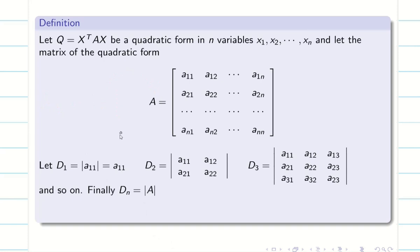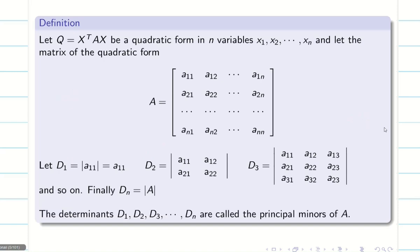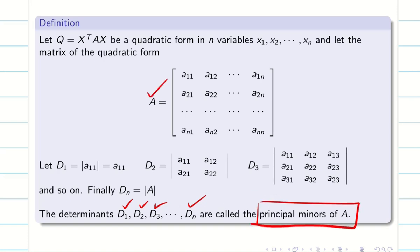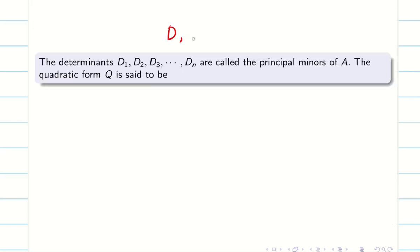Since our concern is a 3×3 matrix, D1, D2, and D3 — where D3 is the determinant of A — are called the principal minors of A. From D1, D2, D3, ..., Dn, we are going to determine the nature of the quadratic form.